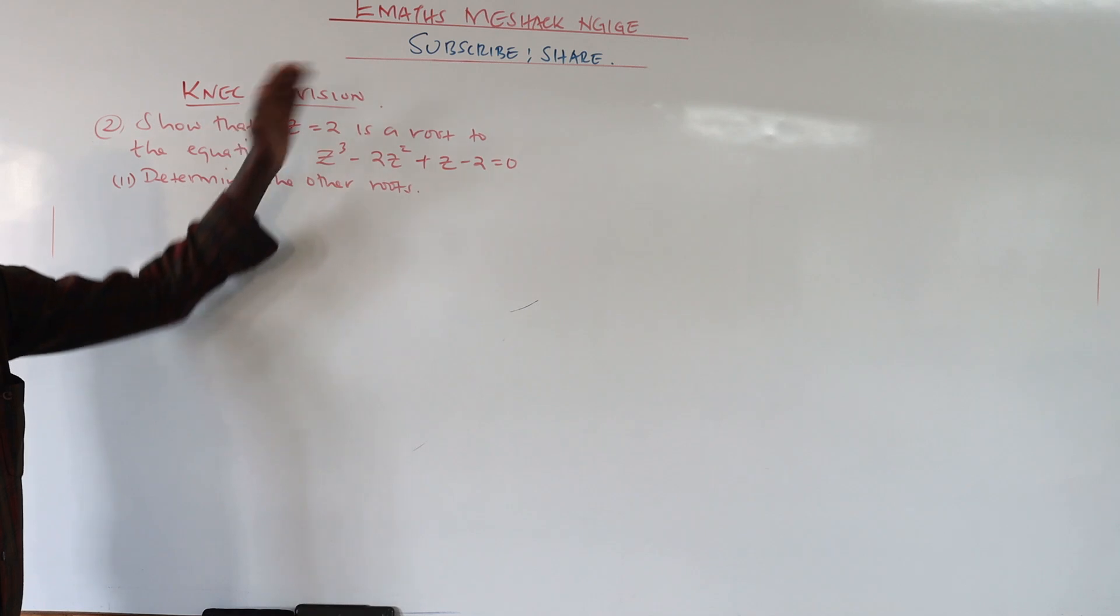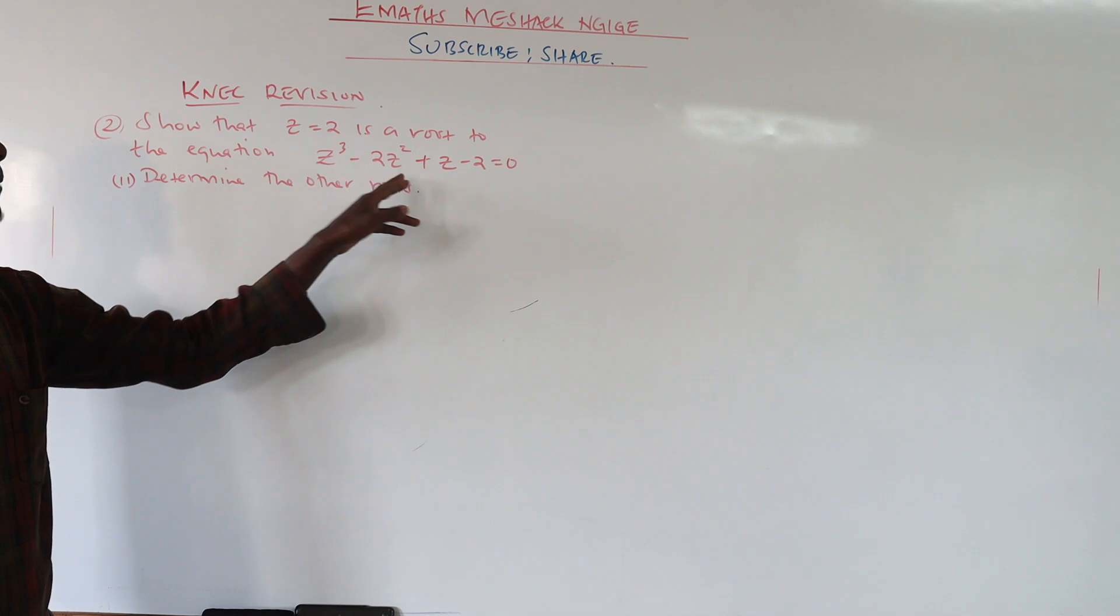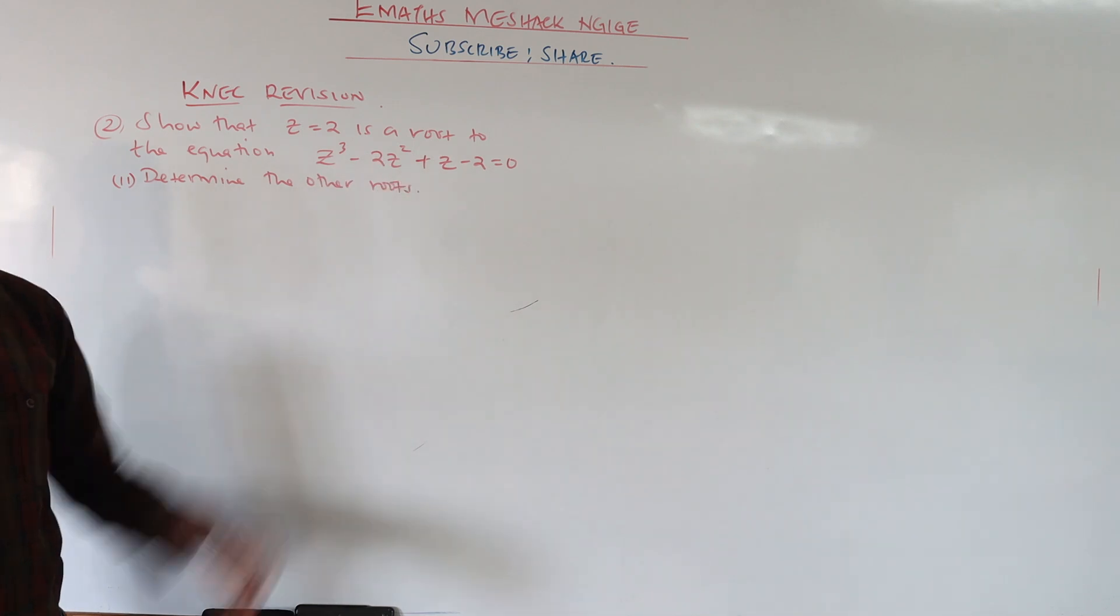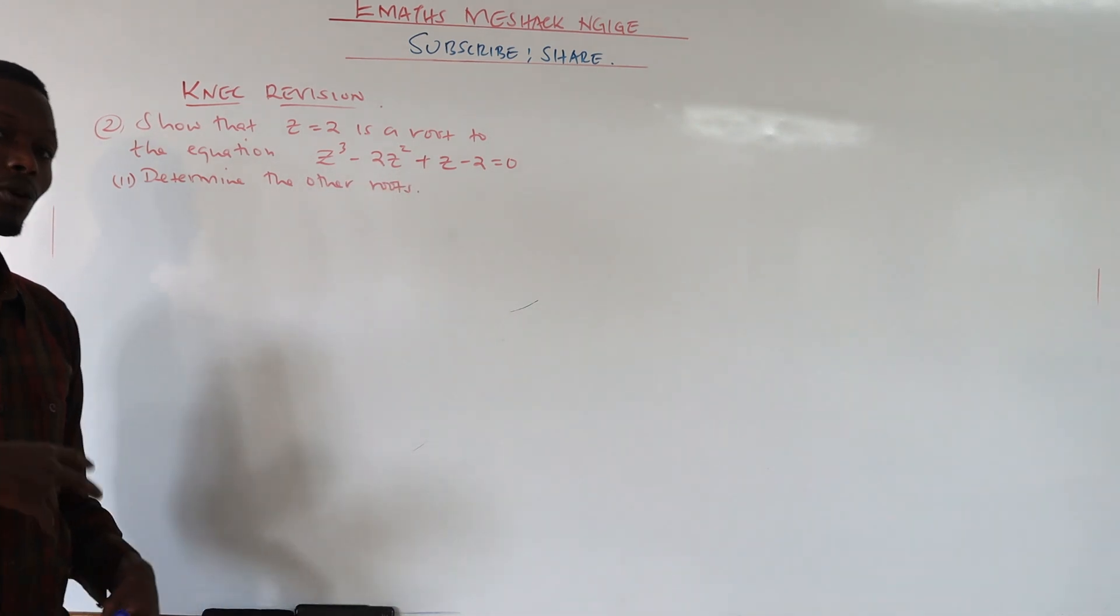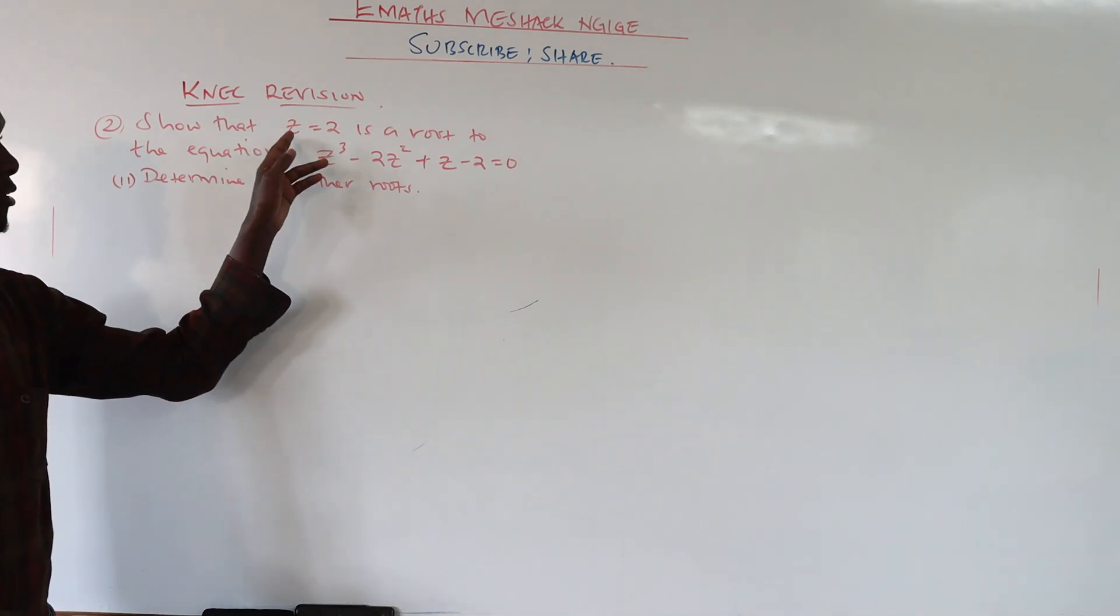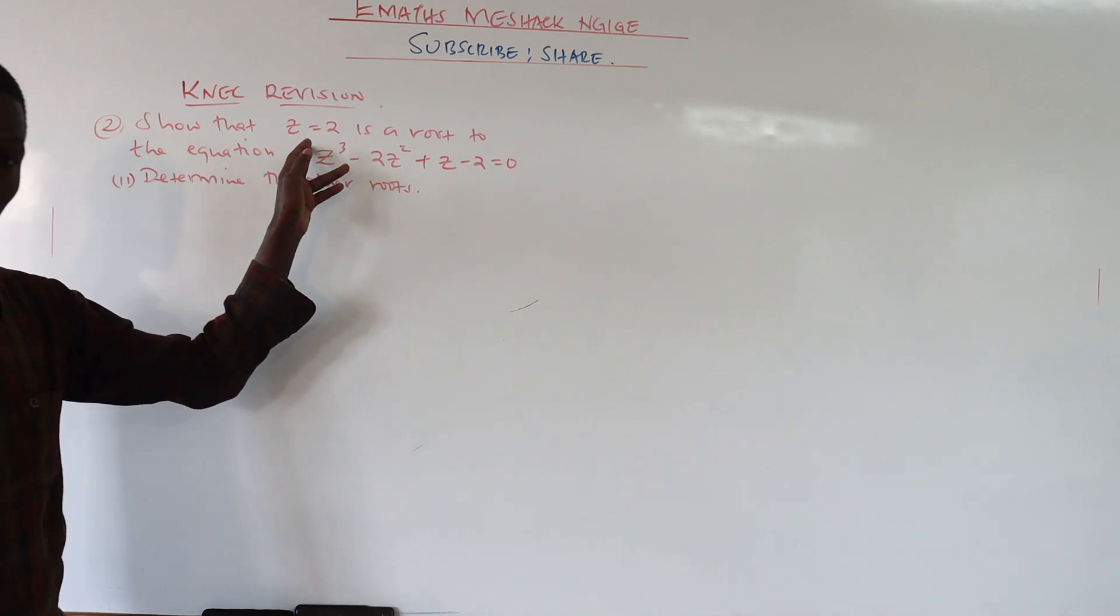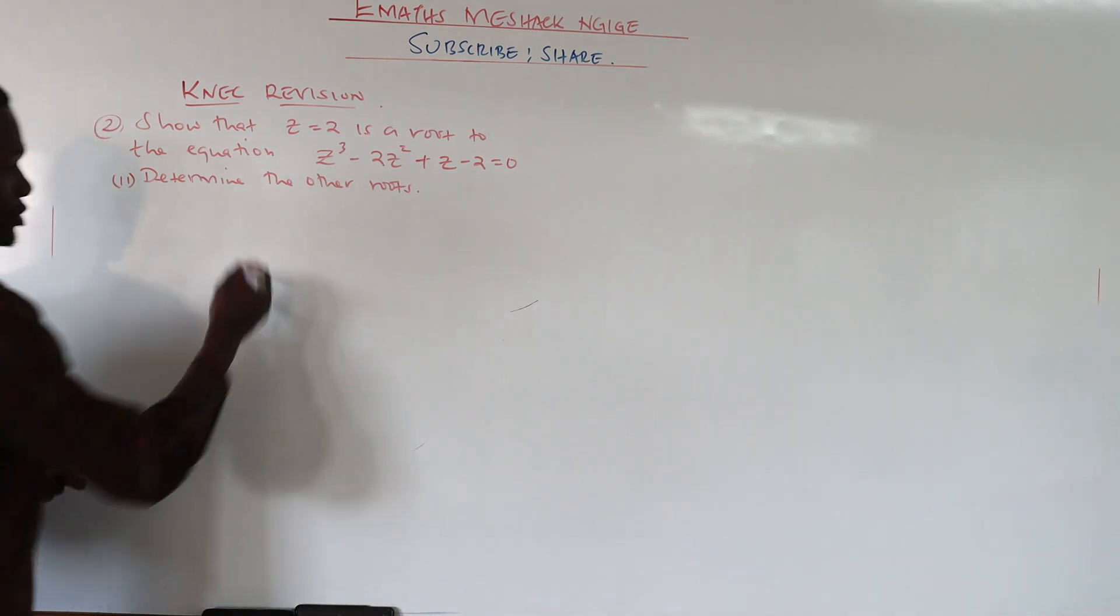We cannot find the other root by default by just comparing. For us to show that this is a root, we have to divide this factor with this function here so that we can get the other two roots. Our division of the factor with this function will show that indeed this is a root.